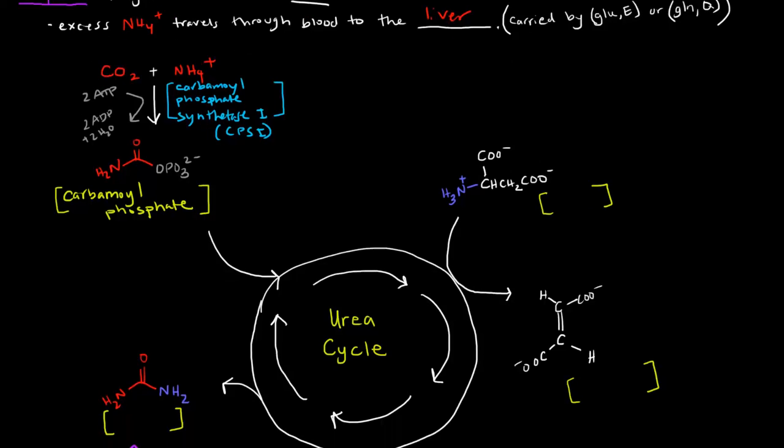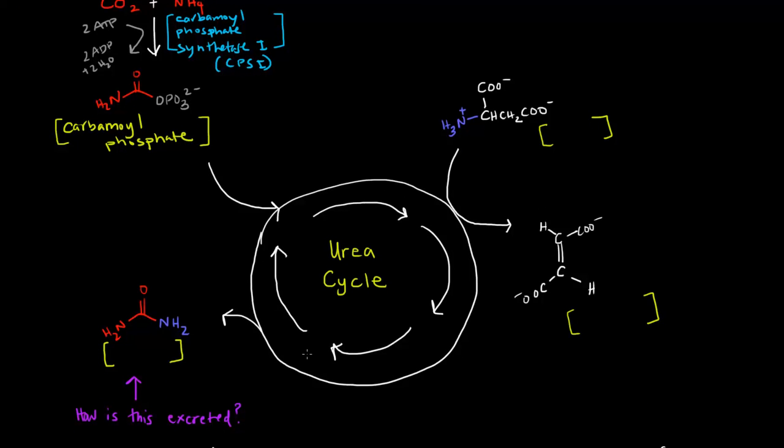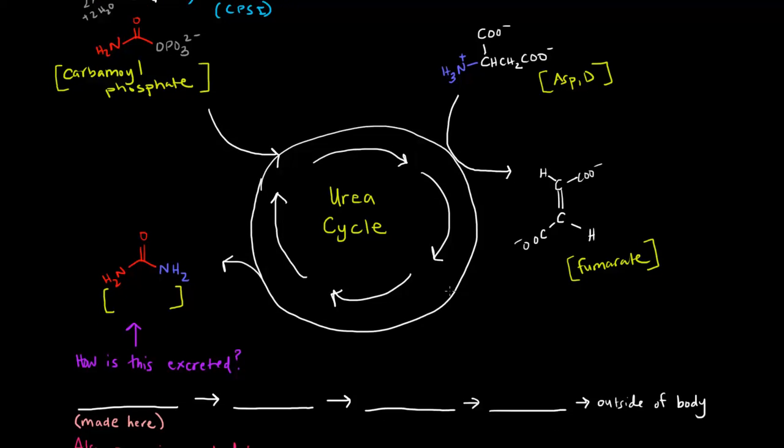So essentially, once that carbamoyl phosphate is created, it goes to the urea cycle. And the urea cycle has a bunch of different intermediates, a few of which I've drawn here. This one here you should recognize as a particular amino acid. So the amino group here, carbonyl group here, and this R group here, this is aspartate. This thing here, this intermediate, you should recognize as an intermediate of another pathway, the TCA cycle. This thing is called fumarate.